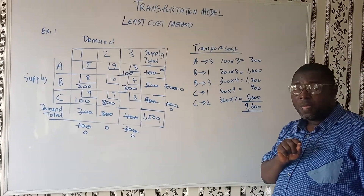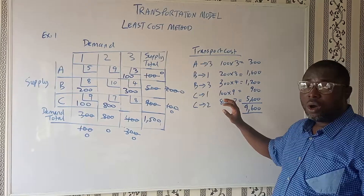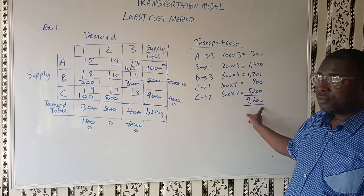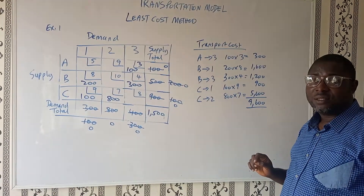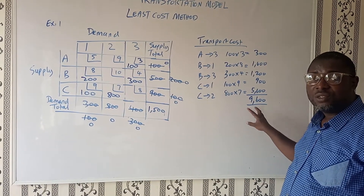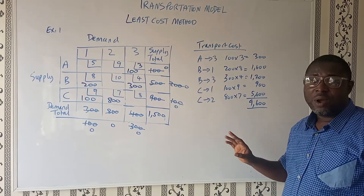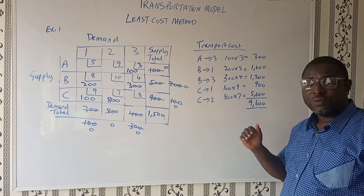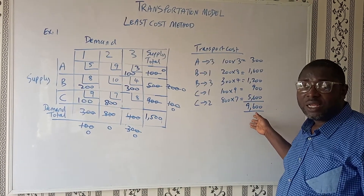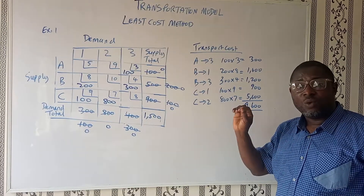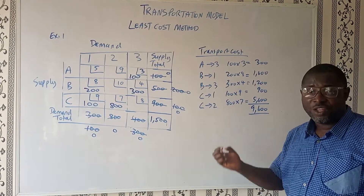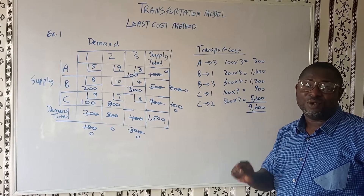So I want to give you a little assignment. I want you to go back to the video on the north-west corner method example 1 and compare this answer with the answer we got in that video. Tell me in the comment section which of these two methods you would apply if you were the manager of this company — would you use the north-west corner method or the least cost method to decide how to transport your goods? Tell me the one you'd choose based on the cheaper transport costs you would incur. I'll wait for you in the comment section. Thank you very much.